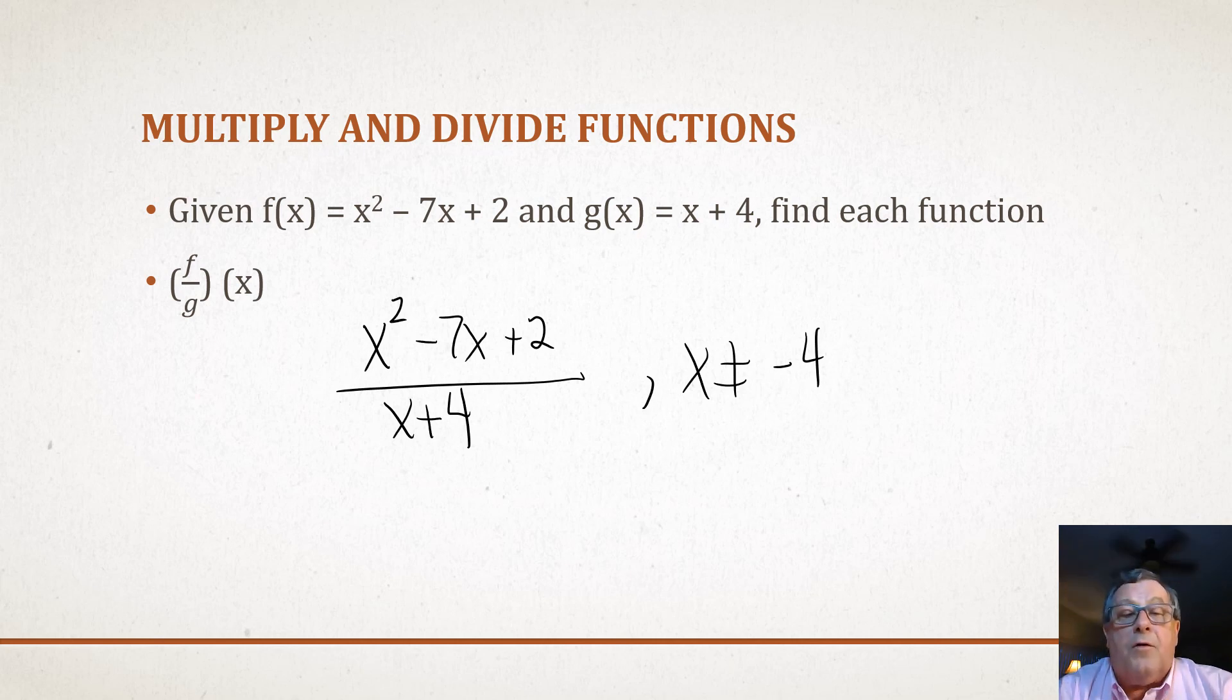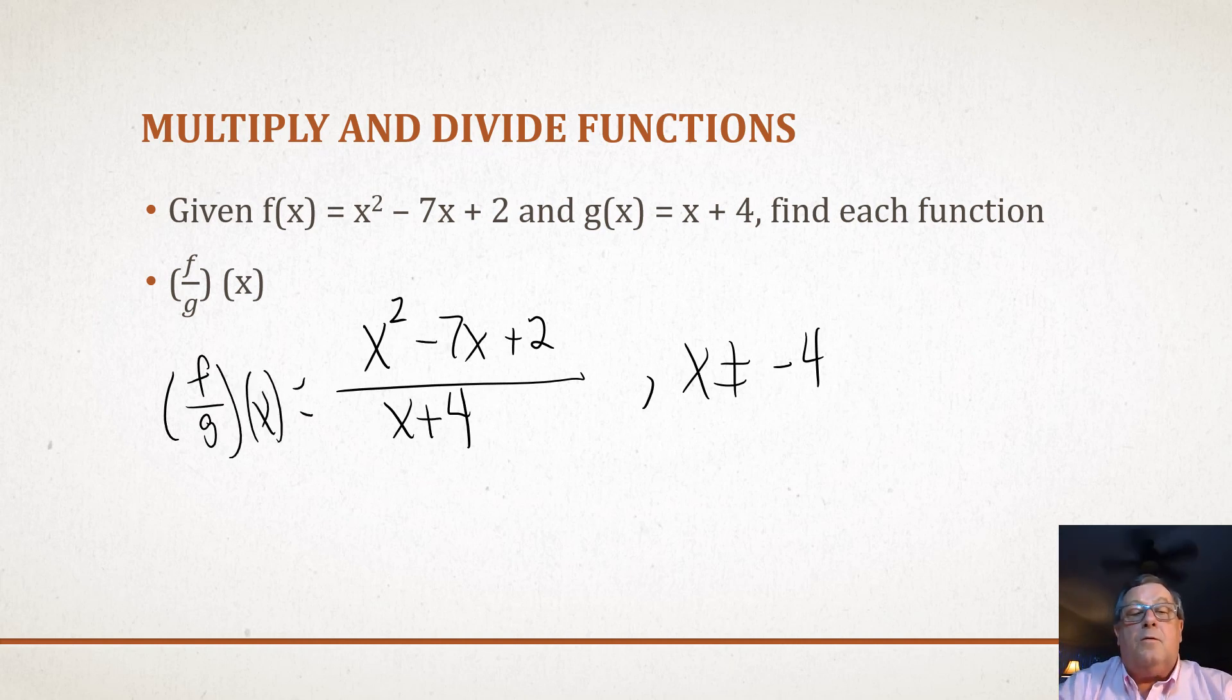So this is the division of f divided by g of x, and it equals x² - 7x + 2 over x + 4, where x cannot equal -4.